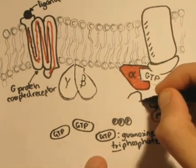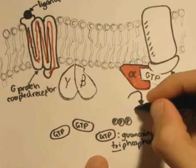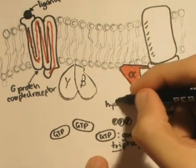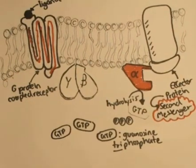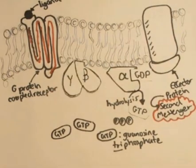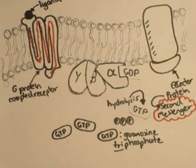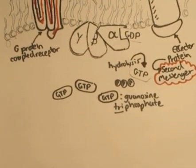When the alpha-effector protein finish what they're doing, the alpha subunit hydrolyzes GTP back into GDP. Alpha subunit then dissociates with the effector protein. The alpha subunit reattaches back with the beta-gamma complex, completing the G-protein signaling process.